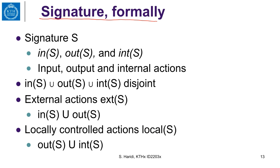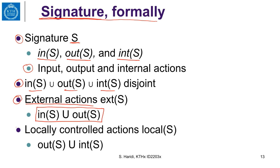The automaton has a notion of signature. A signature defines the set of all actions and consists of three disjoint sets: a set of input actions, a set of output actions, and a set of internal actions. They must be disjoint — we cannot confuse an input action with an output action. The set of external actions is the union of input and output actions, and the set of locally controlled actions is the union of output and internal actions.